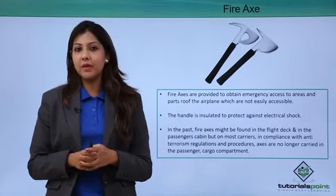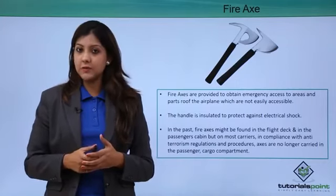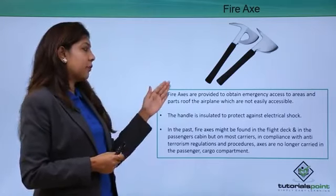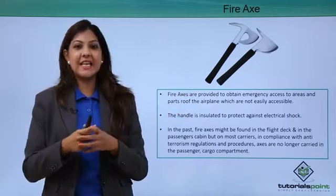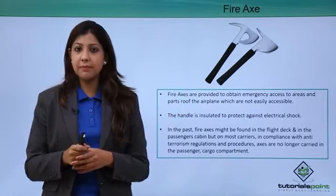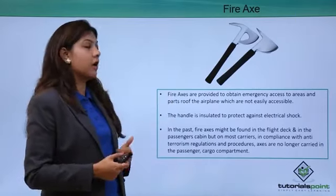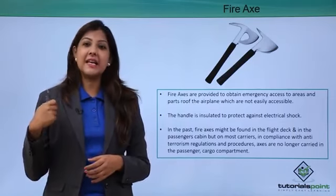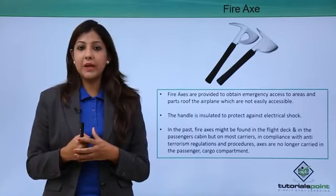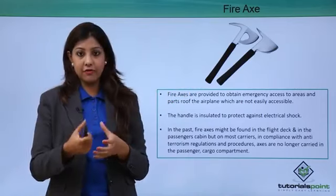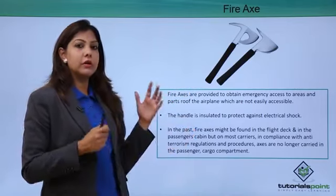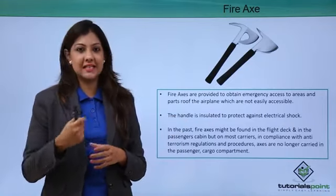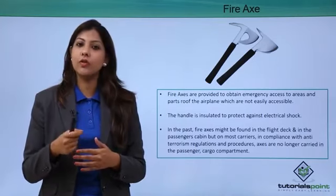A fire axe is placed inside the cabin but in an area not easily seen by passengers, as it could be misused. The fire axe provides emergency access to areas of the airplane not easily accessible otherwise. In an emergency, if a crew member needs to break part of the aircraft not reachable by bare hands, they use the fire axe. The handle is insulated to protect against electric shock. Keeping passenger safety in mind, the fire axe is sometimes placed in the flight deck or cockpit.